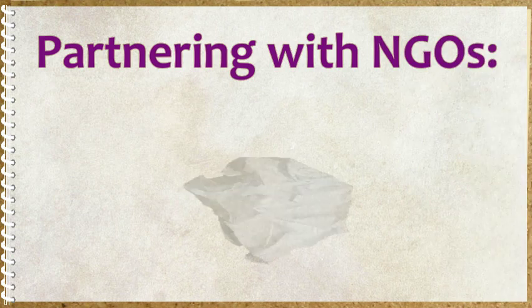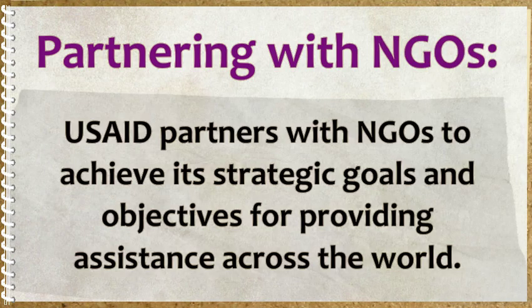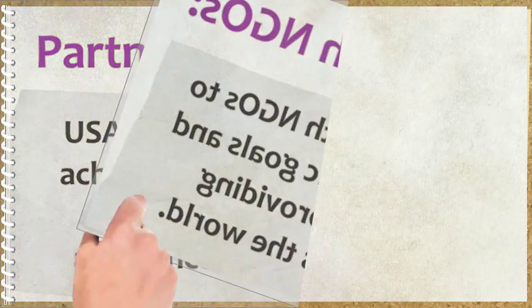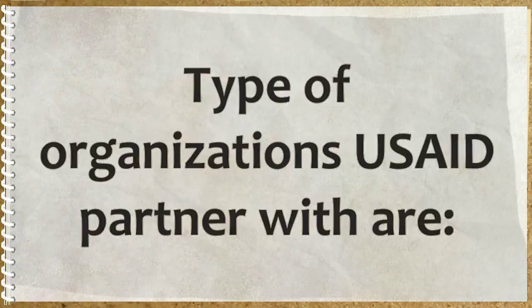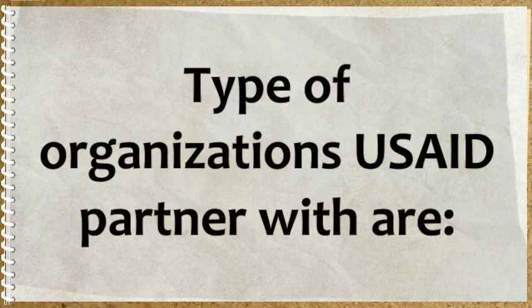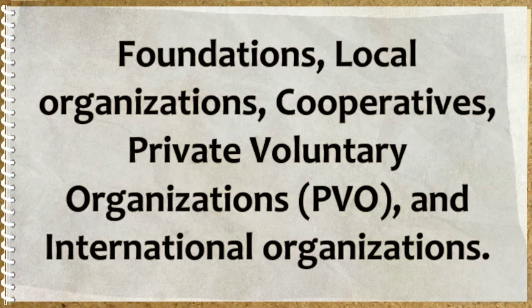Partnering with NGOs: USAID partners with NGOs to achieve its strategic goals and objectives for providing assistance across the world. The types of organizations USAID partners with are Foundations, Local Organizations, Cooperatives, Private Voluntary Organizations, and International Organizations.